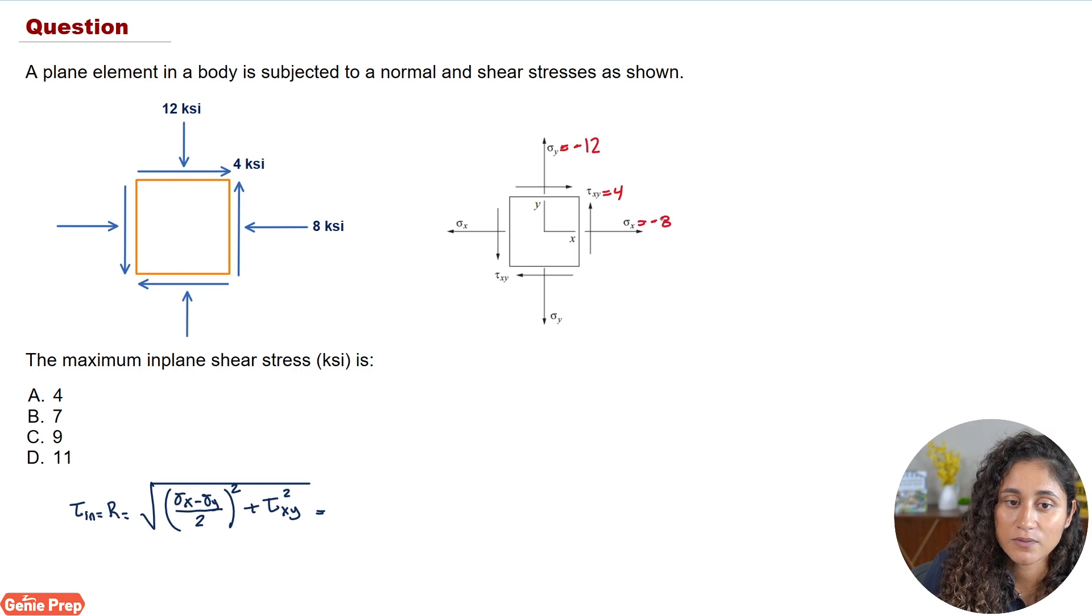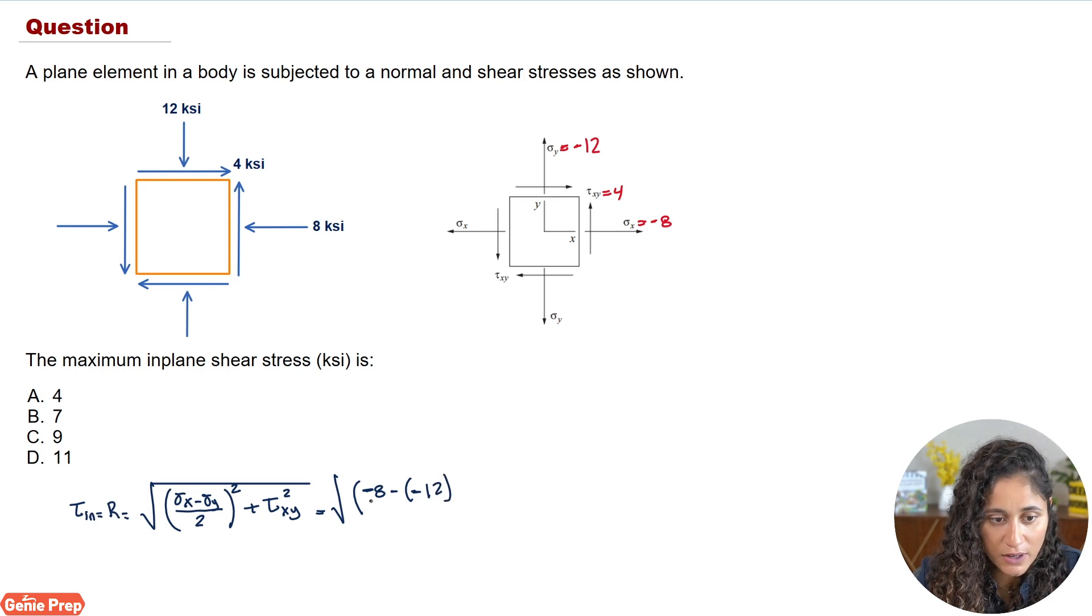Now let's go ahead and plug in the numbers into the equation. So first we have sigma x, which is minus 8, then we're going to have minus sigma y, which is minus 12. Then we're going to divide this term here by 2 and then we're going to square this term. Then we're going to have plus the shear stress, which is 4 squared.